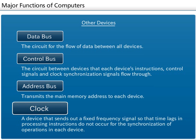Clock - The processor's clock rate influences processing speed. The clock is a device that sends out a fixed frequency signal so that time lags in processing instructions do not occur for the synchronization of operations in each device.